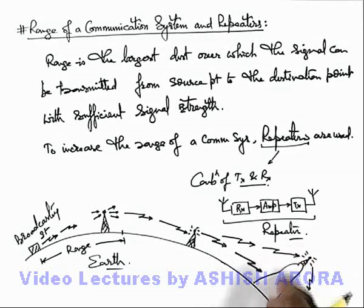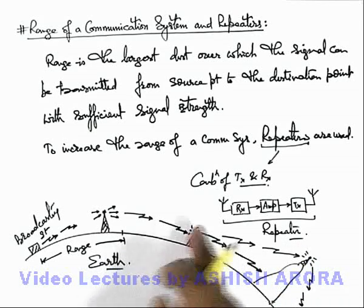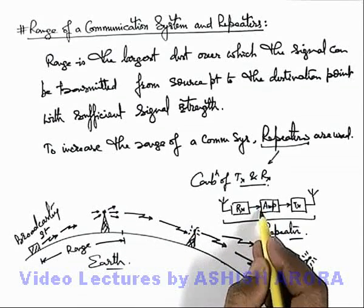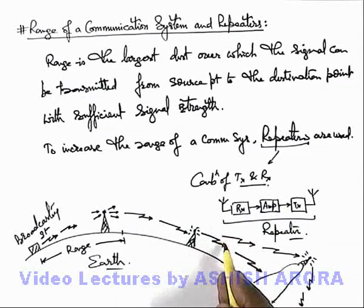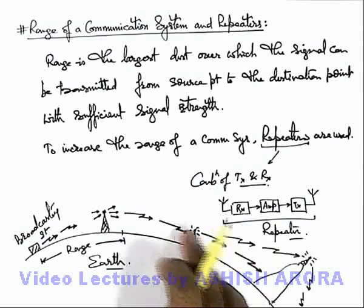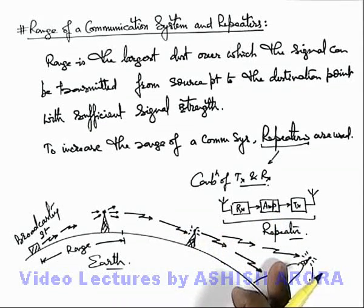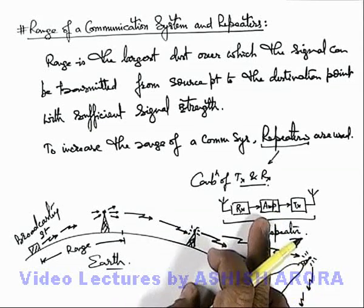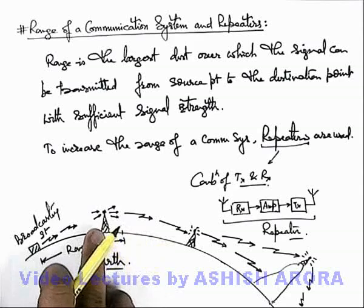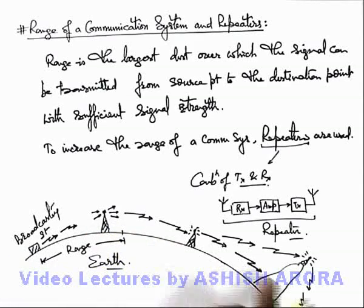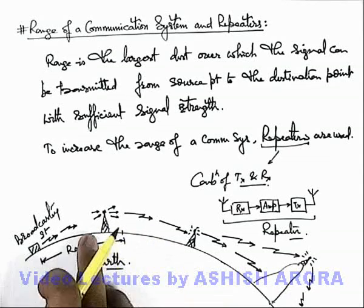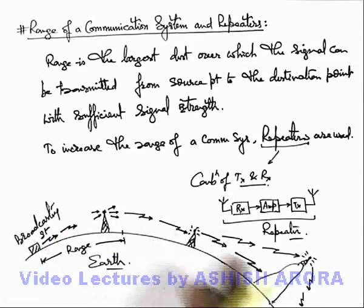Using repeaters at every point, the amplifier increases the signal strength, which is further transmitted. So using a limited or unlimited number of repeaters, we can send information to any extent wherever required.